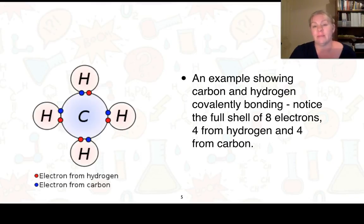Here's an example showing carbon and hydrogen covalent bonding. Notice the full shell of eight electrons, four of which come from hydrogen and four of which come from carbon. So we've got the blue and the red and one can see eight electrons in that full shell.